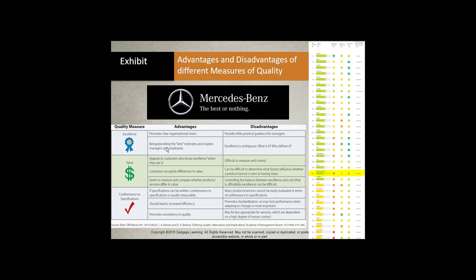The second quality measure is value — customers recognize the difference in value, and it's easier to measure and compare whether a product or service delivers value. Toyota is a good example of a value-based brand. Sometimes the appeal is difficult to measure, and it can be hard to determine what factors influence whether a product is seen as having value. Remember the sticky pedals issue with Toyota? If your value of a Toyota product is reliability and then they're having defects, what's left? That can be a serious problem.